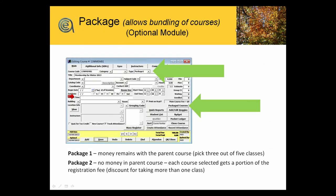Packaging is an optional module at $1,400. Package one type is particularly useful for tech schools and career schools who do things like a CNA program that might have several different individual classes that make up the CNA program — it's a great way to help manage that process. Package two is something anybody could use and allows you to actually bundle classes together. You buy the web bundle and get courses A, B, X, and Y at a discount, and enrolling in the package will automatically enroll the student in all four of those classes.